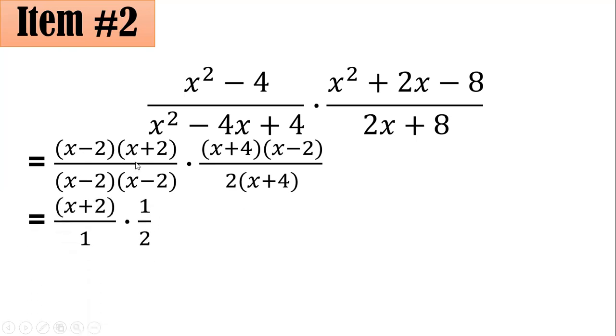And what is left is x plus 2 all over 1 times the quantity times 1 half. And simplifying such, the product of the numerator is x plus 2 and the product of the denominator is 2. Hence, the correct answer here is letter A.